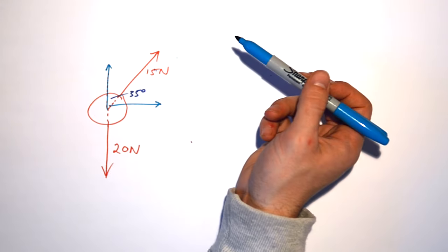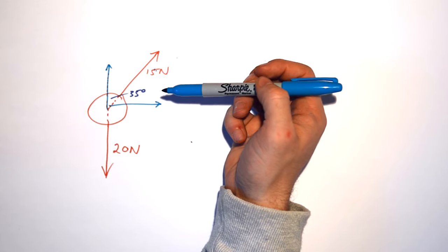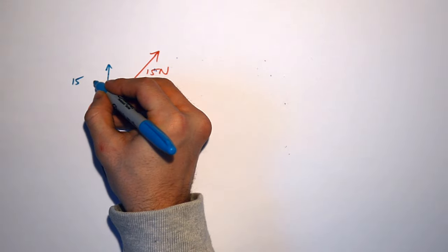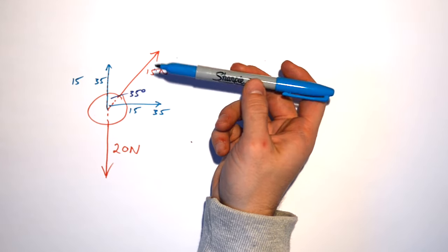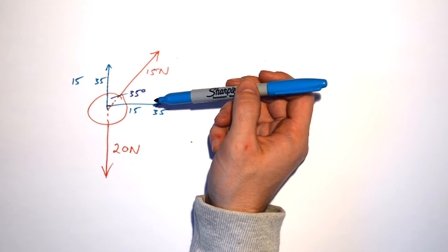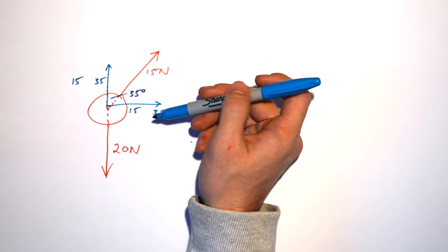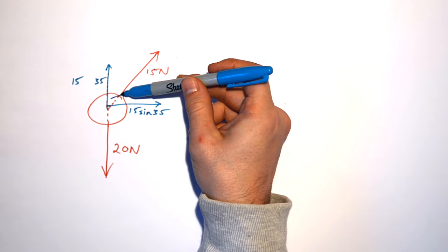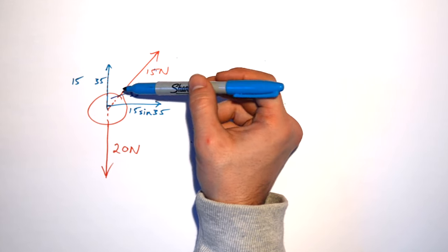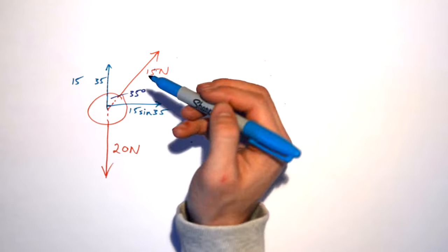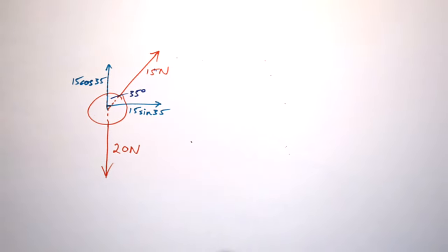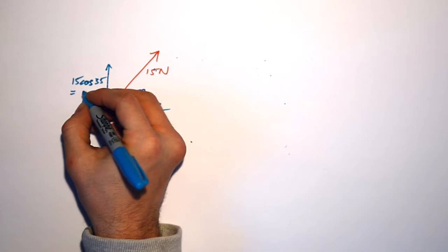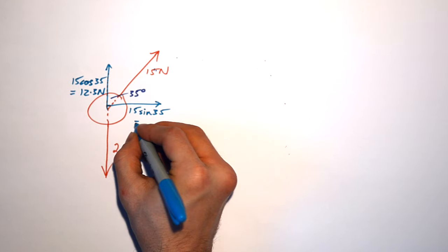So it's going to be 15 times cos or sine of 35 — but which one? The easy vectors trick says: if you turn away from the angle going from the resultant to the component, you use sine. If you go from the resultant through the angle to the component, you use cos. The vertical component is 15 sin 35, giving 8.6 Newtons, and the horizontal component is 15 cos 35, giving 12.3 Newtons.